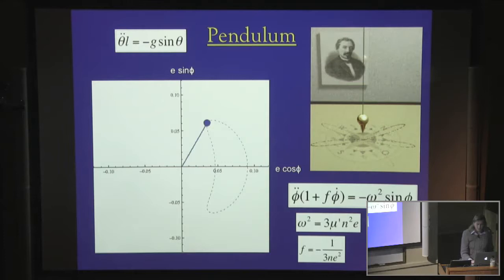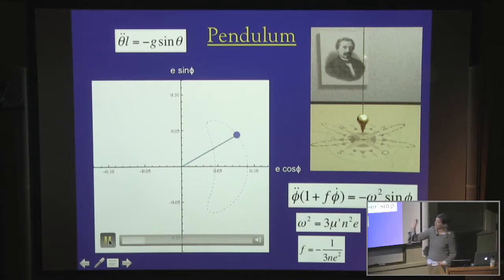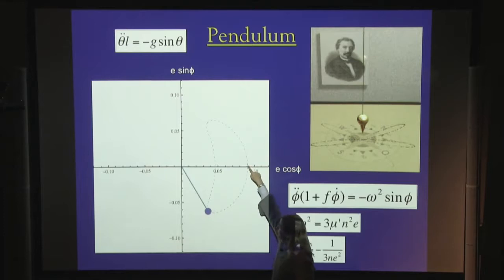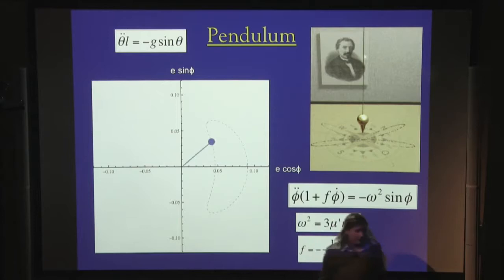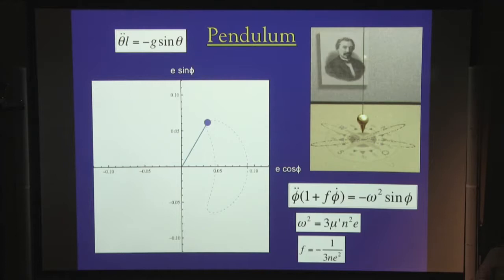If you only plot the position of conjunction of the system — only the angle at which they meet — you see how it is driven towards pericenter and then back towards pericenter. If this motion looks very similar to a simple pendulum, you are correct, because it turns out you can actually capture the full complicated equations of resonant interactions in the very simple pendulum analogy.